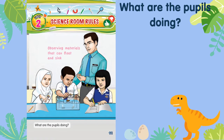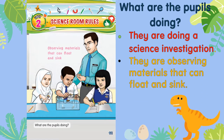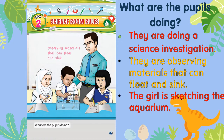Our topic today is about the science room rules. What are the pupils doing in the picture? Apakah yang dibuat oleh murid di dalam gambar? There are a few answers that you can say. They are doing a science investigation. Mereka sedang membuat eksperimen sains. They are observing materials that can float and sink. Mereka sedang membuat pemerhatian objek yang boleh timbul dan tenggelam di dalam air. The girl is sketching the aquarium — murid perempuan itu tengah melakar gambar aquarium.